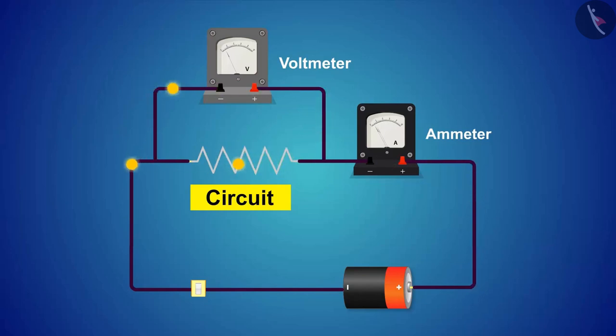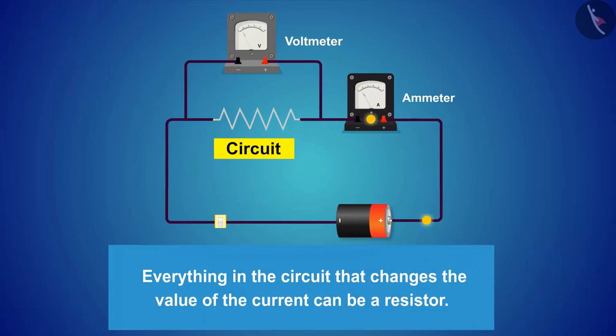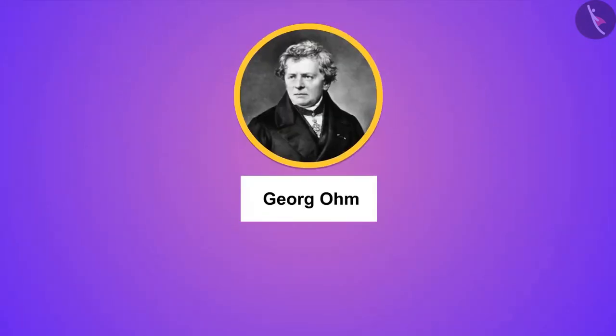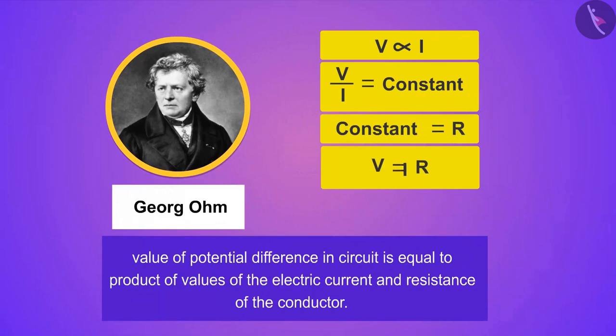Now you must be wondering what the resistor looks like. Everything in the circuit that changes the value of the current can be a resistor. Bulb, LEDs, or any special kind of wire can be a resistor. According to Ohm's law, the value of potential difference in a circuit is equal to the product of the electric current and resistance of the conductor.